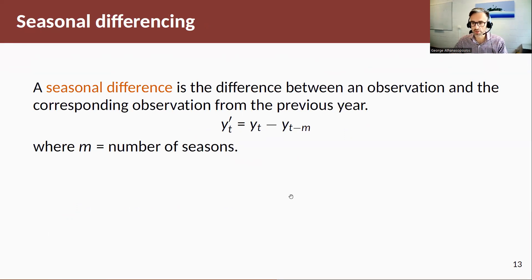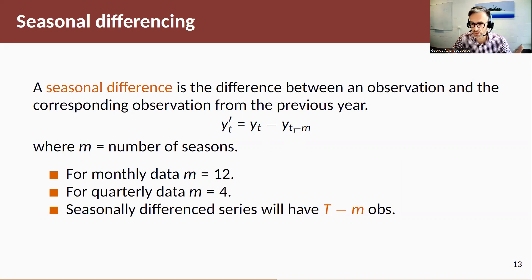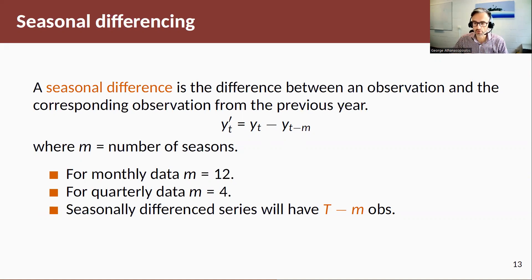With seasonal data, seasonal differencing can help stabilize the mean and deal with seasonality. This is the difference between yt and the observation from the same season in the previous year: yt − yt−m, where m is the number of seasons. For monthly data m = 12, for quarterly data m = 4. So seasonally differenced quarterly data equals yt − yt−4. Since we're differencing m observations apart, we lose the first m observations — so the first year of data is unavailable.